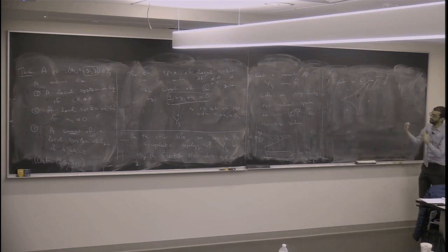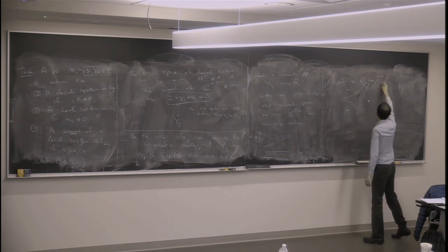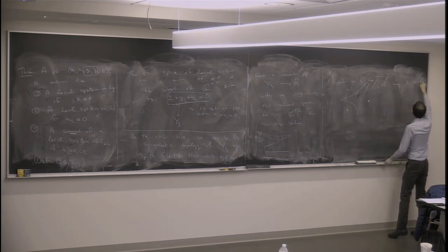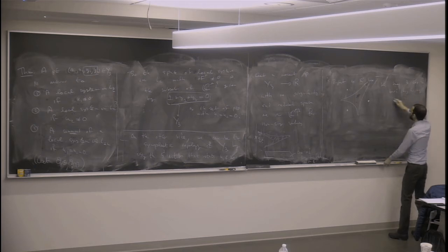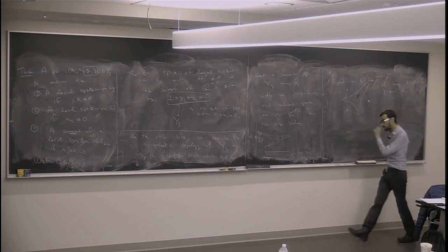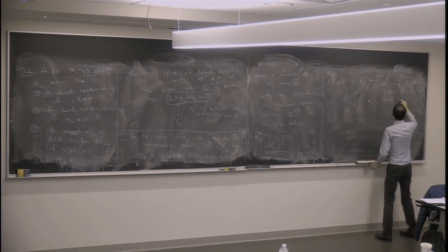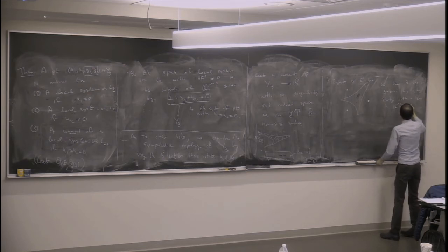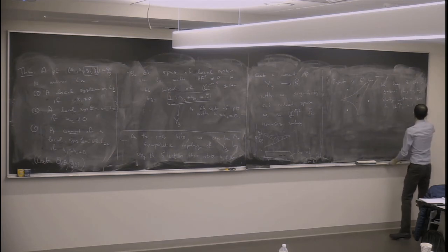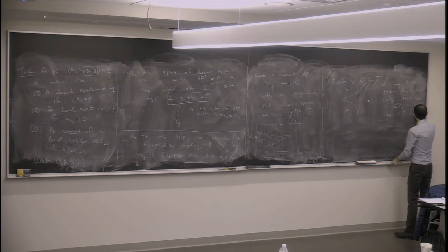What we did with Urugu and Katsokov a long time ago was: we said we can construct a collection of embedded Lagrangians by doing the following thing. You project to the base — this R² base — and when you project to the R² base you get a picture that looks like this. This is what's called the amoeba of the hypersurface, and there are these three regions here where you're not in the discriminant locus.